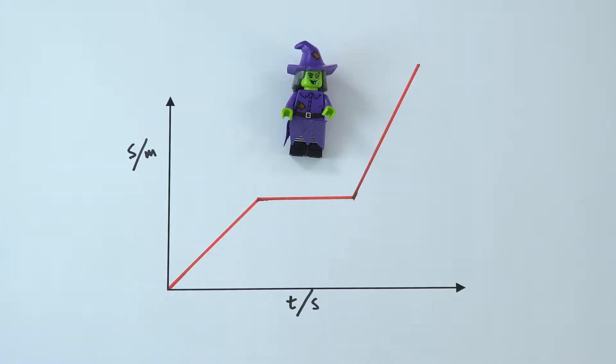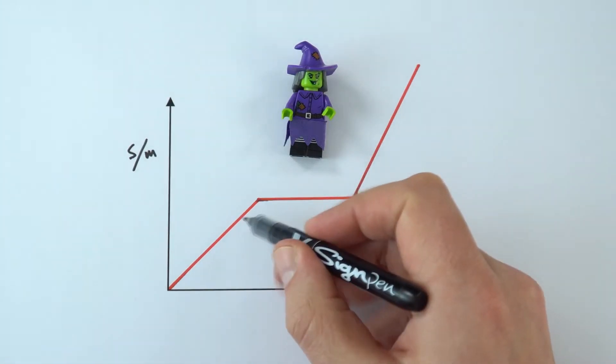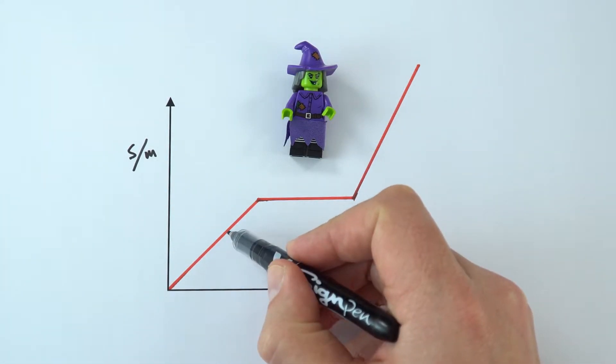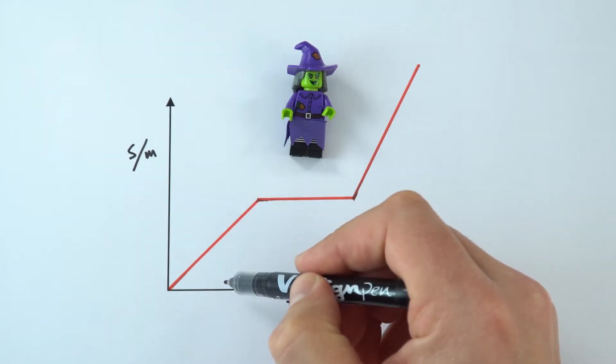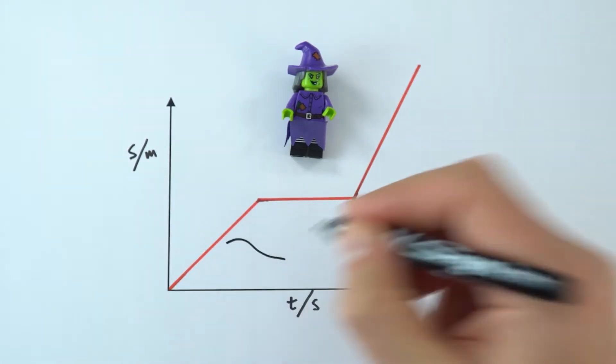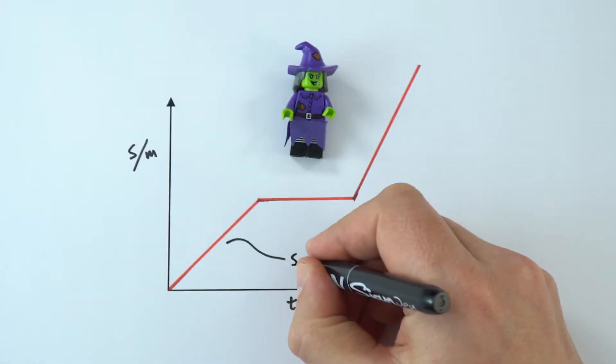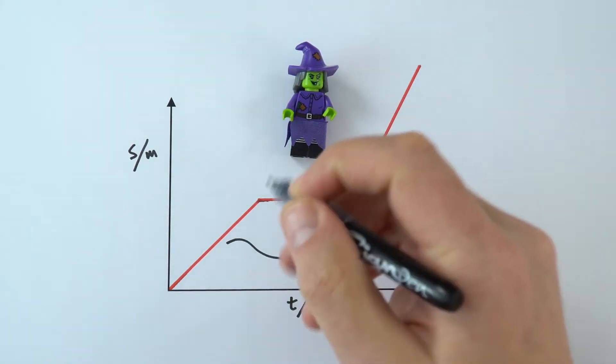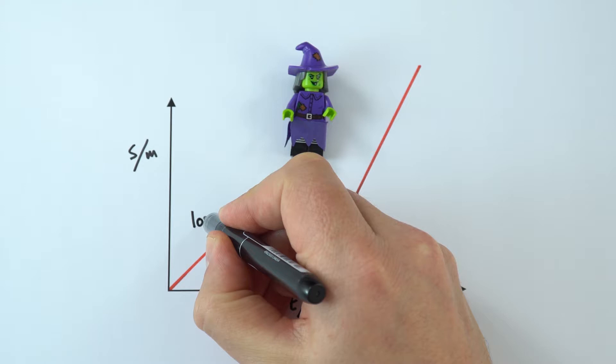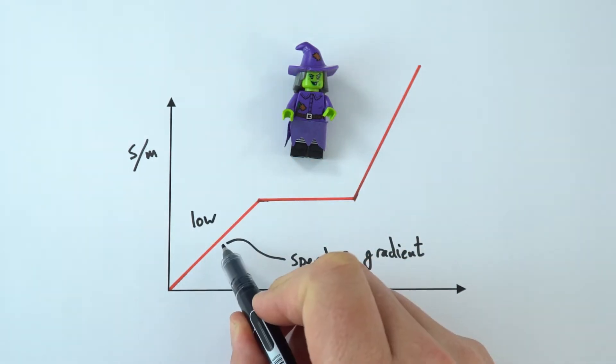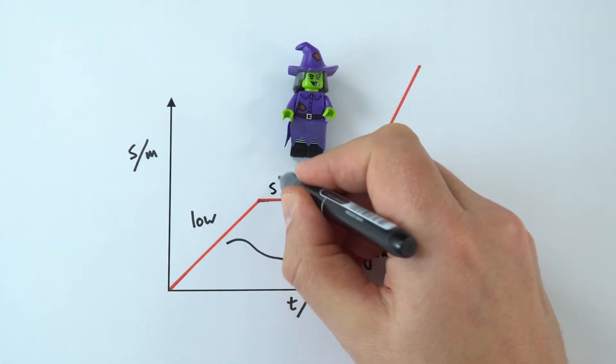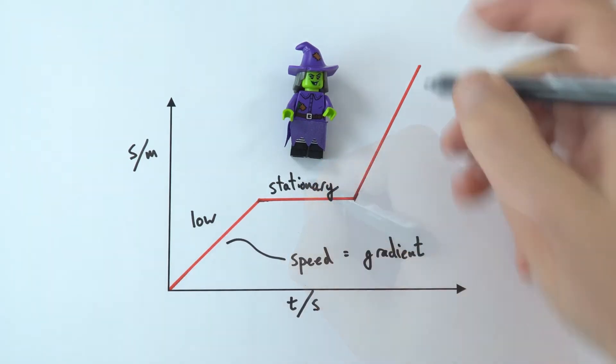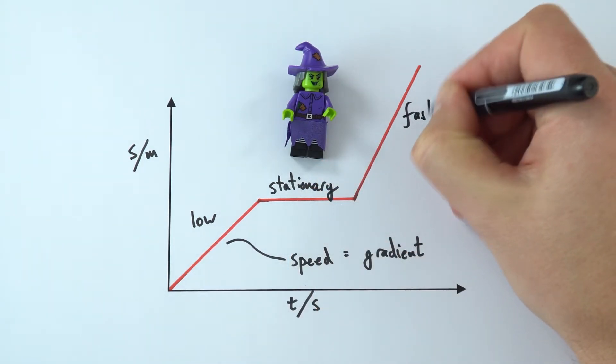Now, when you have the line here, the gradient of that line is equal to the distance divided by the time. And therefore the gradient of a distance time graph is equal to the speed. And what we can see from the graph here is that maybe we've got a low speed initially when the gradient is quite shallow. They are stationary, which means they've stopped. And then finally, they're going fast up here.